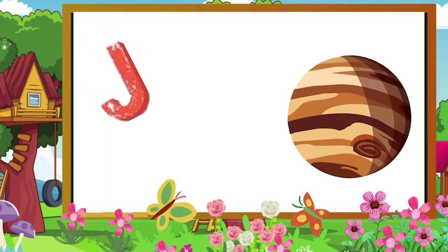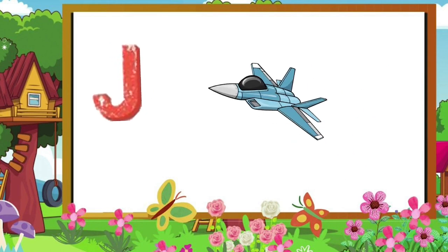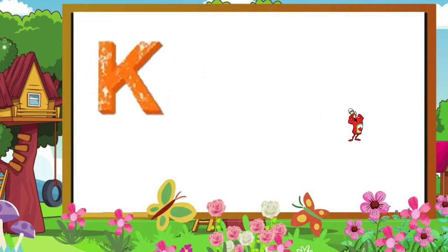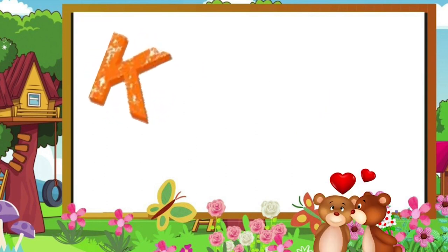I for ice cube, I for infant. J for Jupiter, J for jet. K for ketchup, K for kiss.